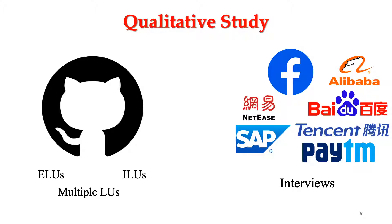So we conduct a qualitative study on both open source and industry projects. For open source projects, we study the external LUs used, internal LUs, and the rationale behind multiple LUs. For industrial projects, we conduct interviews with 13 developers from many internet companies, such as Facebook and Alibaba. Due to time constraints, I will only discuss the use of external LUs next.